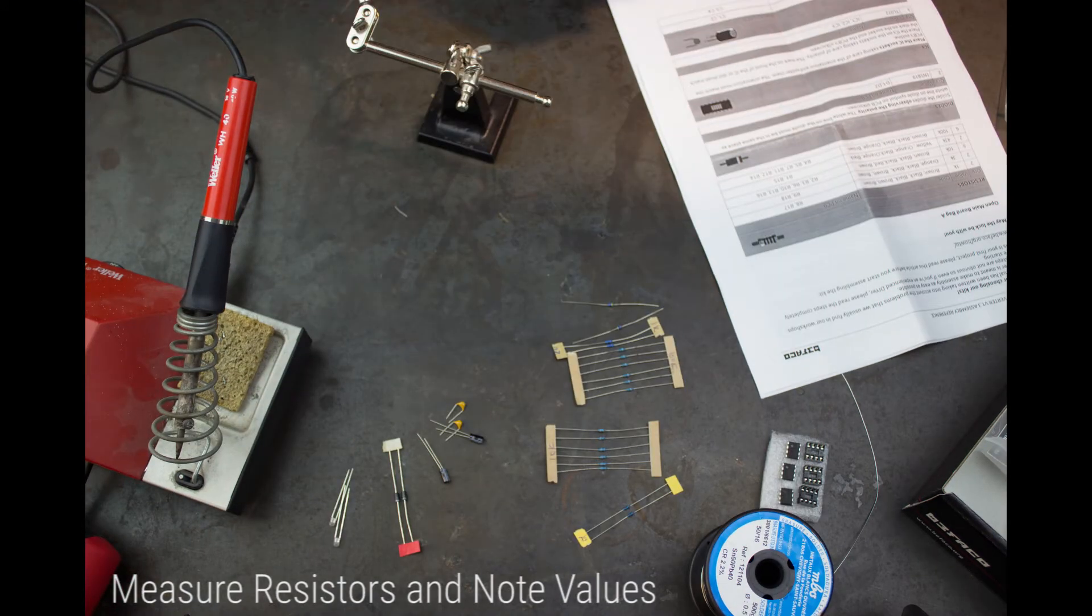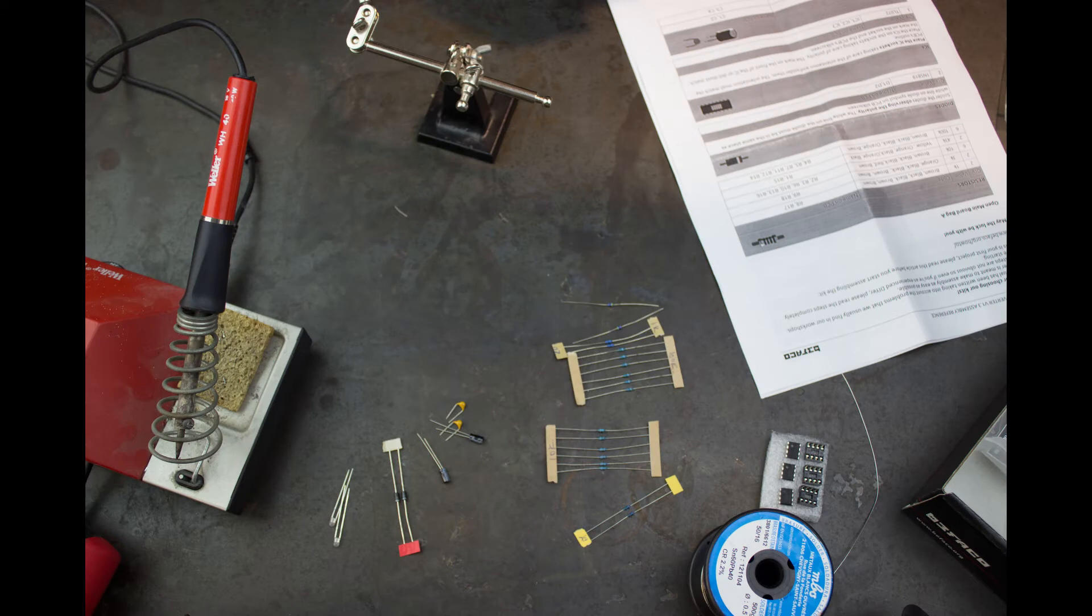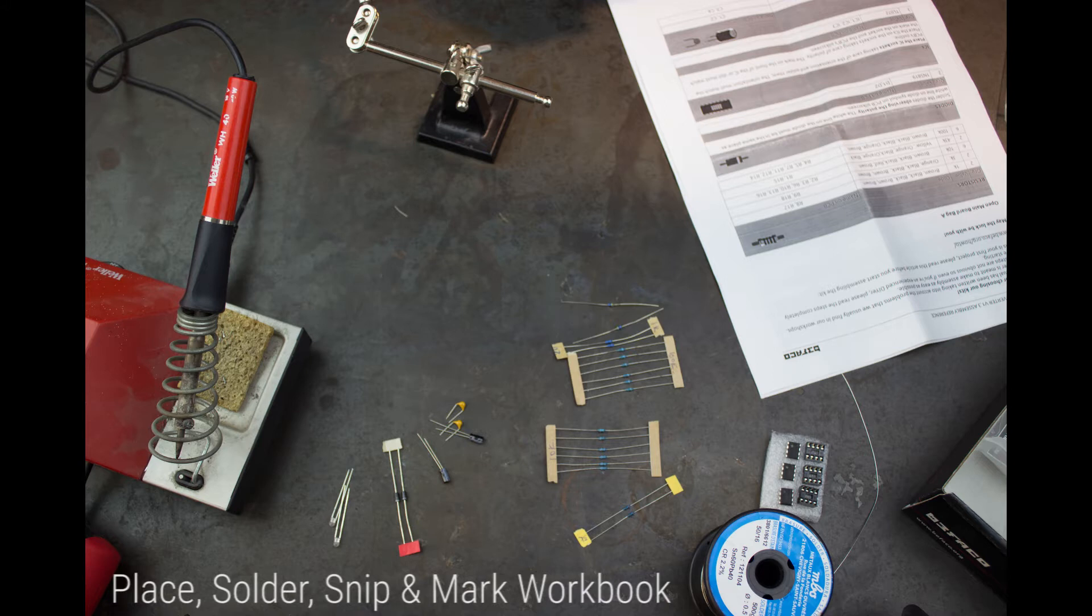Okay great, now we are all tested, and I have marked the paper ends of the resistors with their values. So referencing the workbook and the silkscreen on the PCB, I will now start placing the resistors, soldering them and snipping as I go.